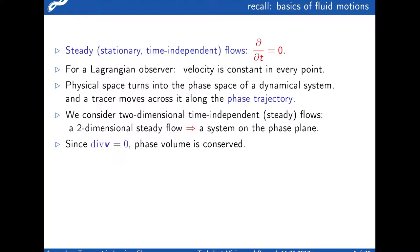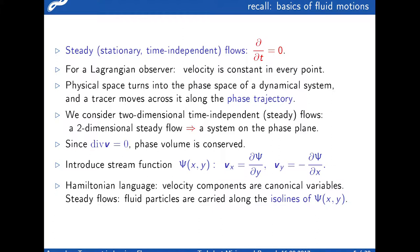We have incompressible fluid, a two-dimensional steady flow. This means phase volume is conserved. When you introduce a stream function, it plays a role of Hamiltonian. Fluid particles are carried along the isolines of Hamiltonian. It's an integrable Hamiltonian system, so there's no chaos, neither Eulerian nor Lagrangian.